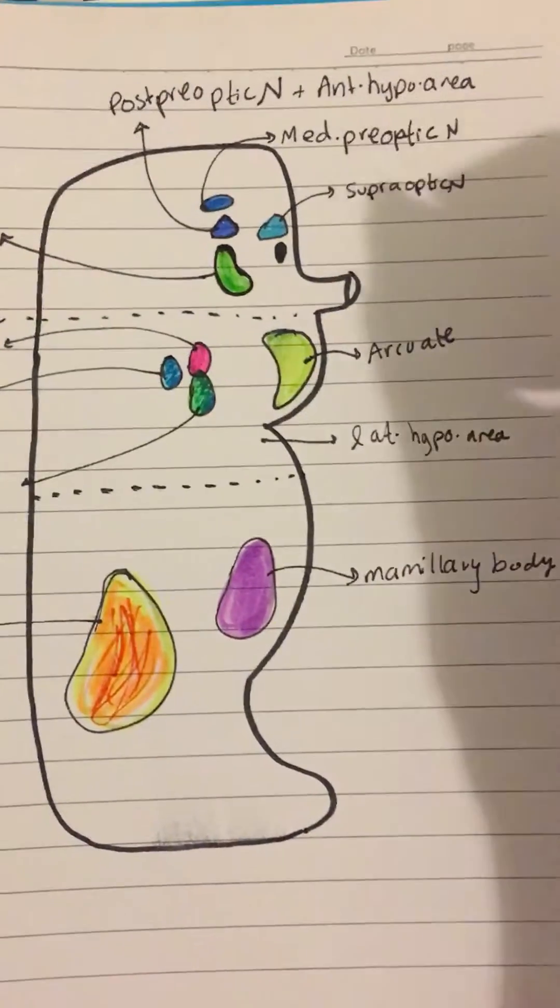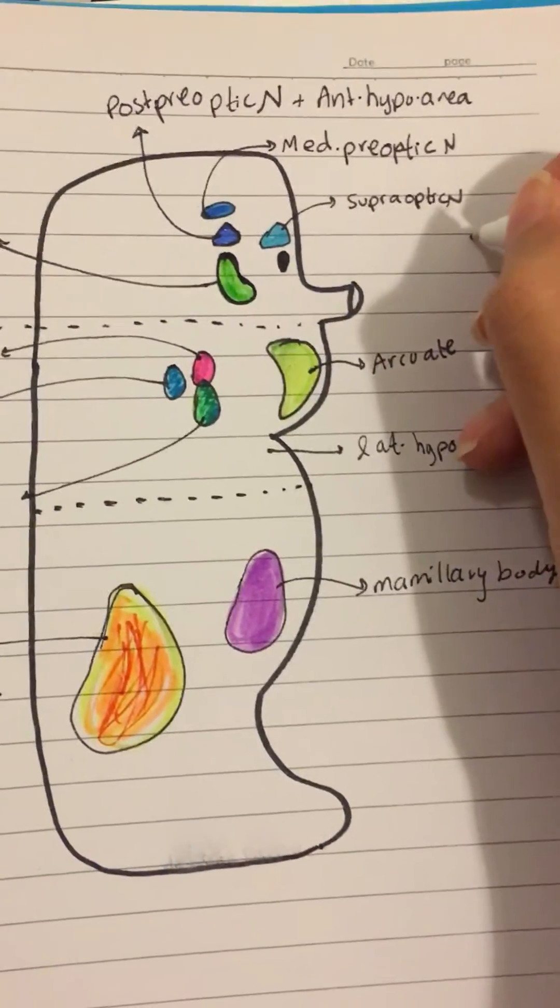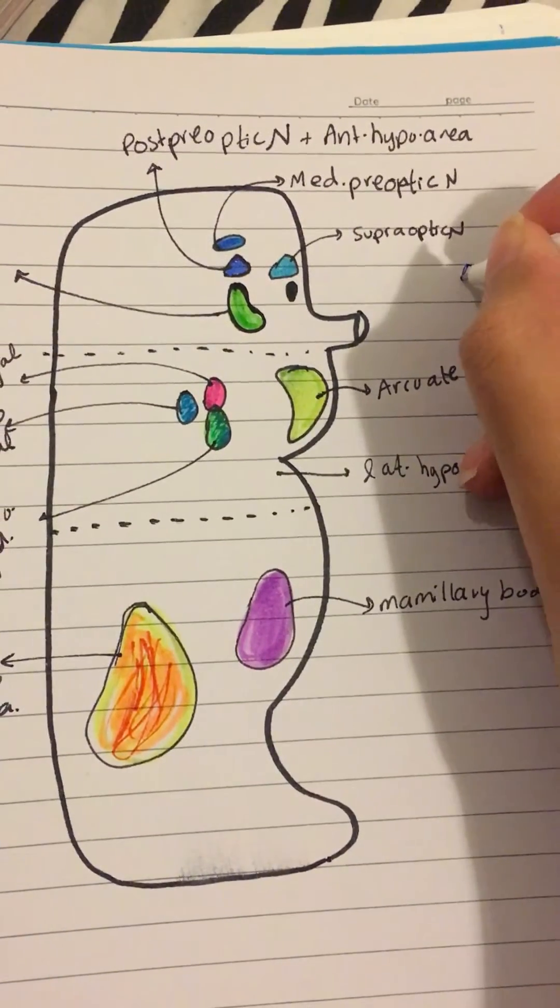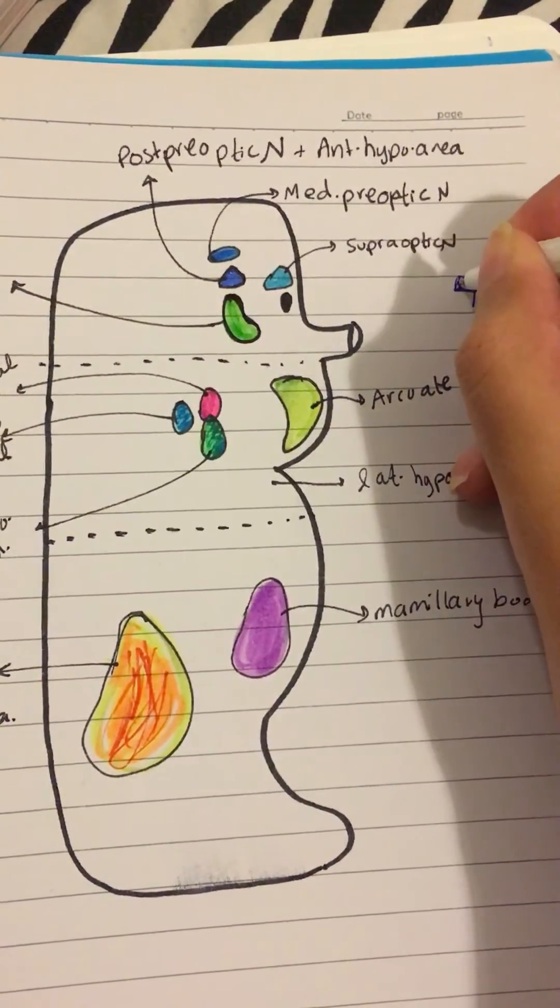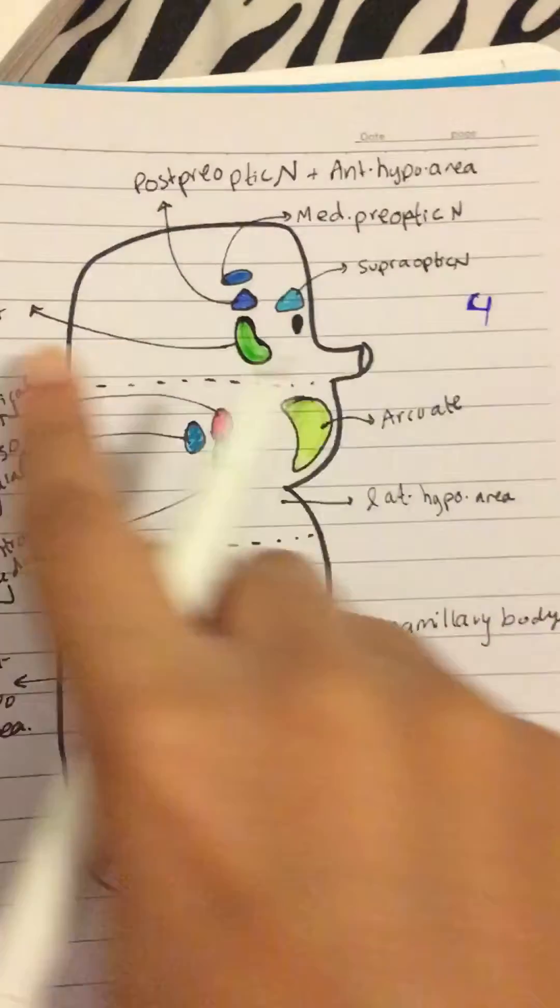Alright, so you have a total of five, sorry, four nucleuses in the anterior bit.